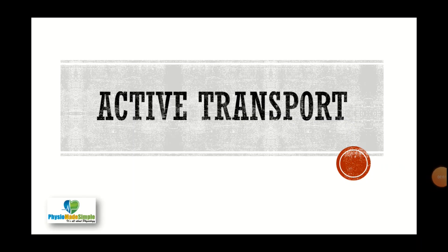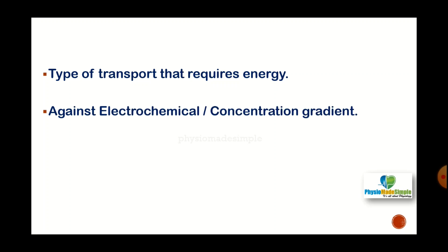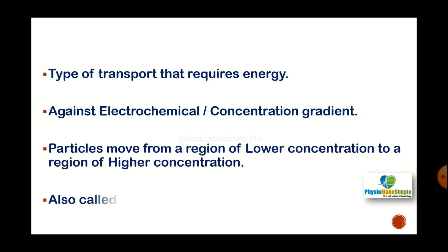The type of transport is active transport, which is a type of transport that requires energy. It requires energy because the molecules move from a region of lower concentration to a region of higher concentration — that is, it is against the electrochemical gradient or concentration gradient. It is also known as uphill movement, like climbing up the stairs or a hill. Since active transport moves molecules from lower to higher concentration, energy is definitely required.